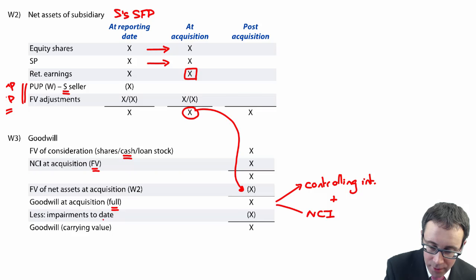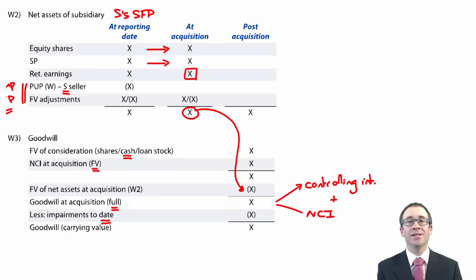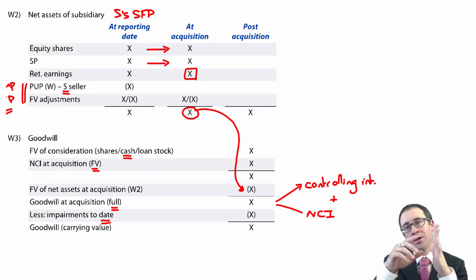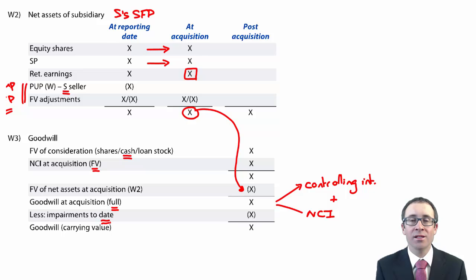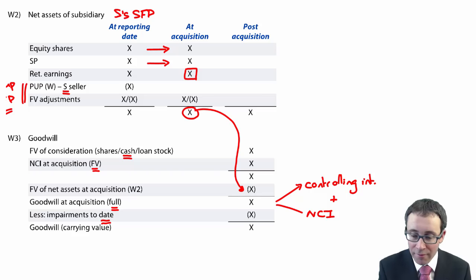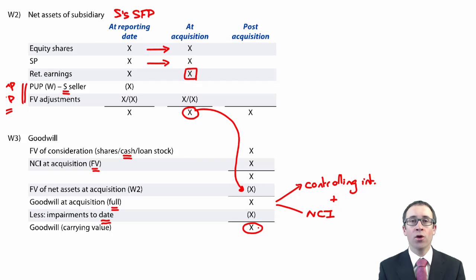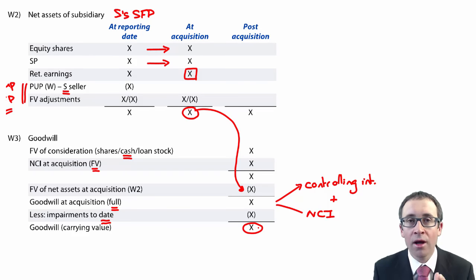You then deduct any impairments — remember it's your impairments to date, cumulative on the statement of financial position. You need to look at every impairment since the date of acquisition. That gives you your carrying value, which needs to appear on the group statement of financial position within your non-current assets. Learn the goodwill calculation — if you don't learn it, you're just learning to fail.